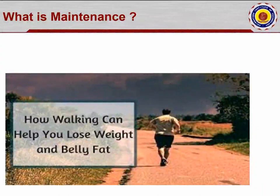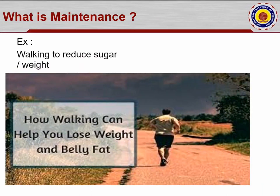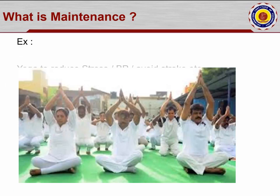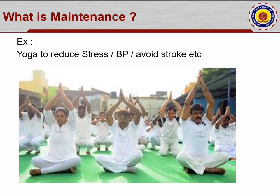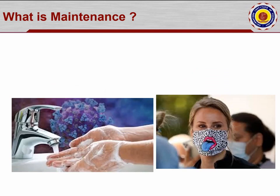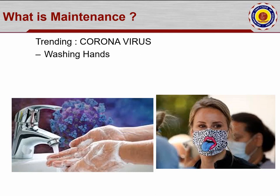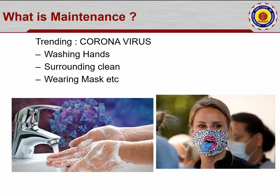For example, we go walking or reduce our weight in the belly — that is one example for maintenance of our human body. Yoga is also an exercise to reduce stress, blood pressure, and avoid brain strokes. With the coronavirus example, we regularly wash our hands, wear masks, and keep our surroundings clean. So like this, we take care of ourselves to maintain our body in a perfect manner, and likewise we should take care of our buildings to maintain the structure throughout its lifetime.